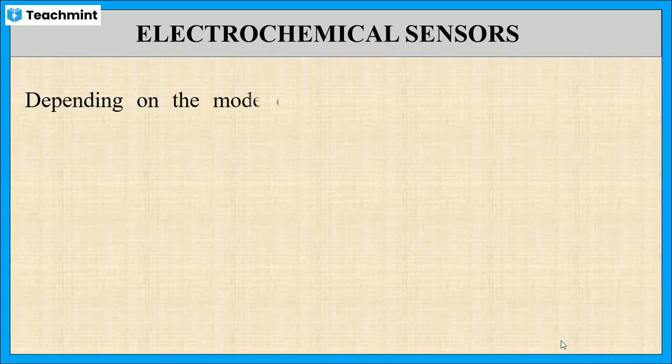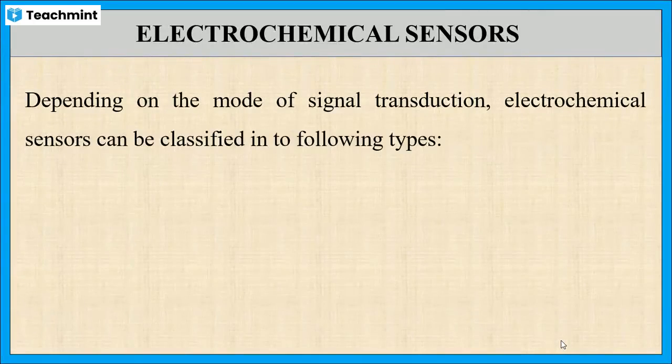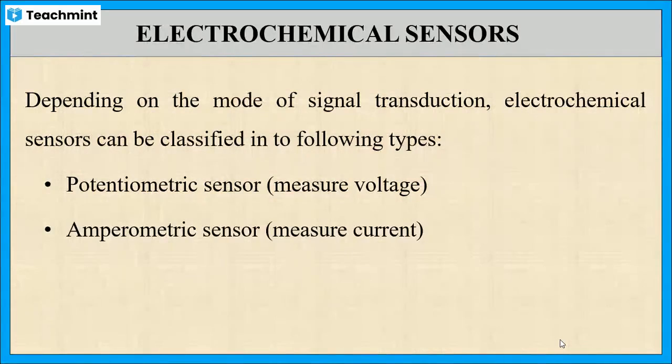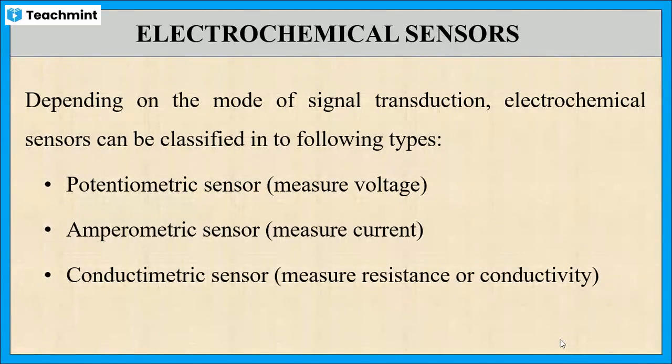Depending on the mode of signal transformation, these sensors are classified into potentiometric sensors which measure voltage, amperometric sensors which measure current, and conductometric sensors which measure conductivity.